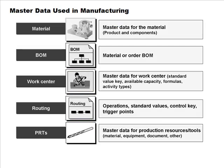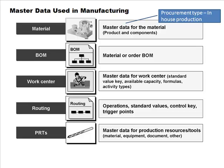The master data used in manufacturing includes the material master. The procurement type for an item produced in-house — in the material master, there's a field called procurement type — will indicate that for a finished item made only in-house, the procurement type will be 'in-house production.' That's essential information for MRP, so it knows this material is not bought from outside but requires an in-house planned order, which will then get converted into a production order.